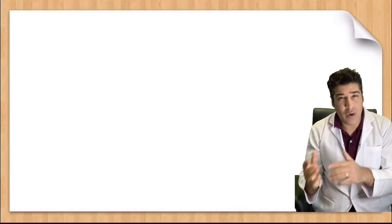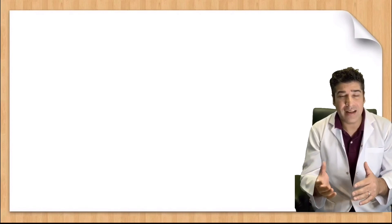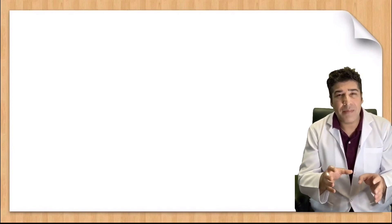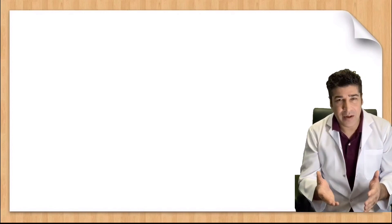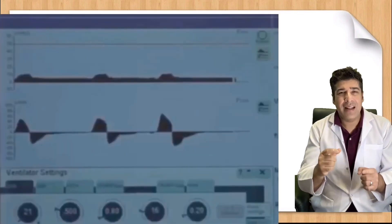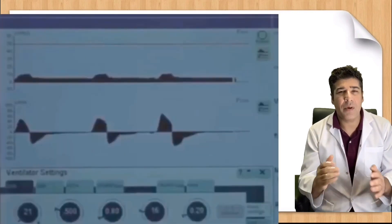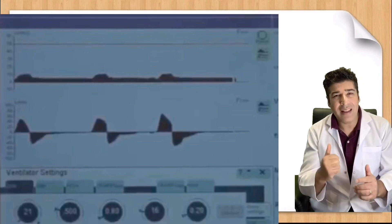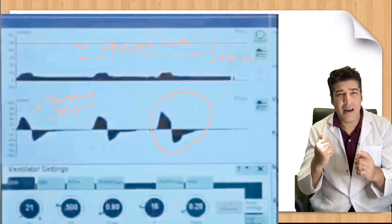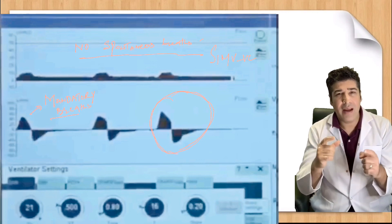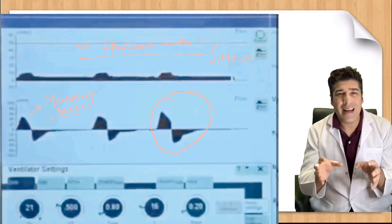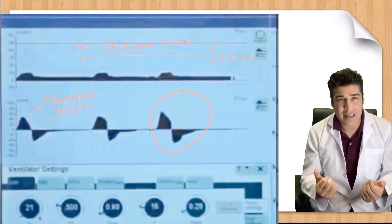Nowadays, all ventilators which have SIMV mode provide pressure supported spontaneous breaths. As you can clearly see from this picture, when the patient does not have any spontaneous ventilation, all breaths are mandatory. You can see the patient on SIMV mode is only getting mandatory breaths because there is no spontaneous effort.